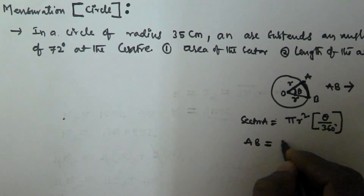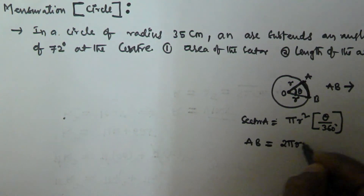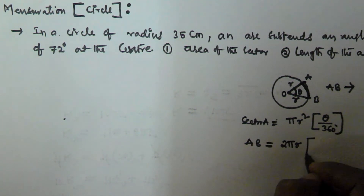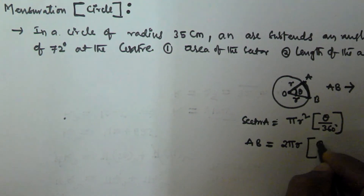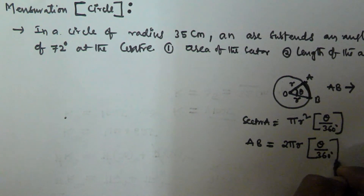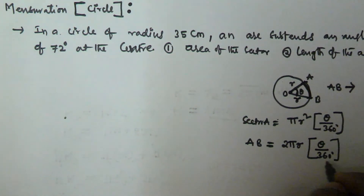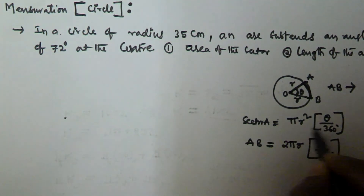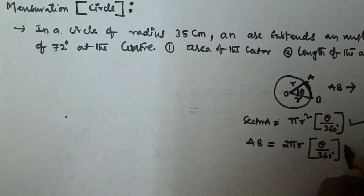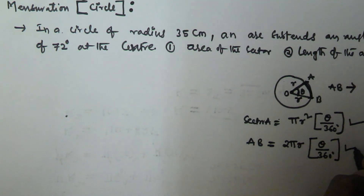And the length of the arc AB is given by the circumference of the circle times θ/360, which is 2πr × θ/360. This formula gives the length of the arc.